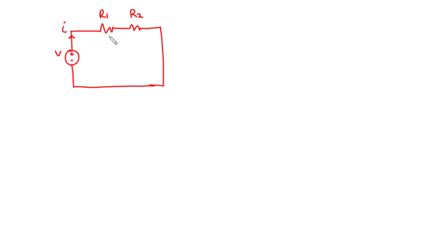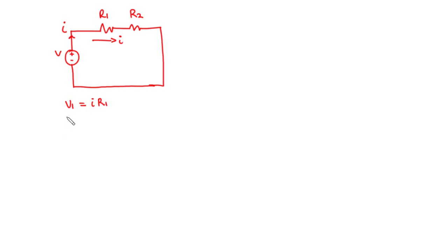This current flows through each of the two resistors. As current flows through each of the resistors, some of the voltage is being dropped across each of them. The value of the voltage drop across each resistor is given by the product of the current times the value of the resistor. So, according to Ohm's law, V1 equals I times R1, and V2 equals I times R2.